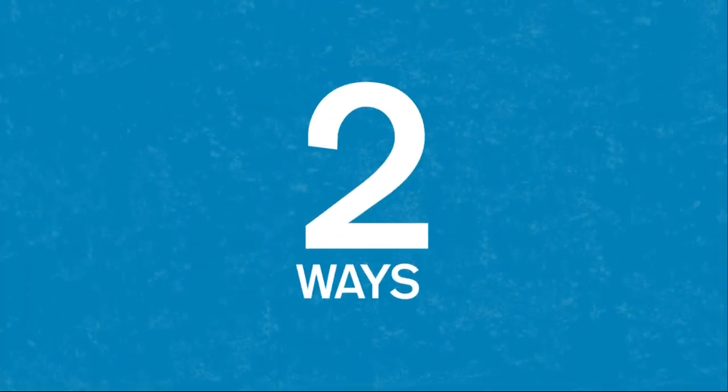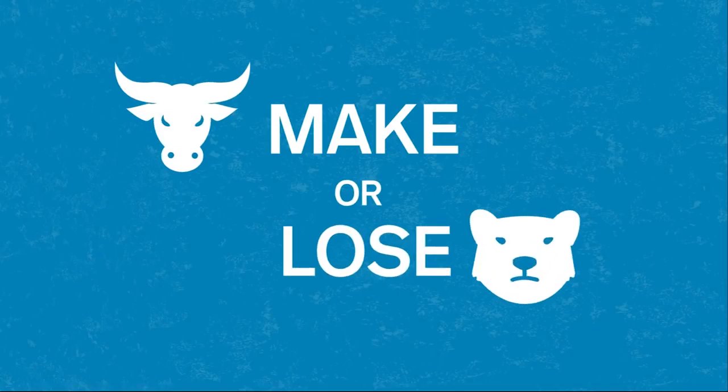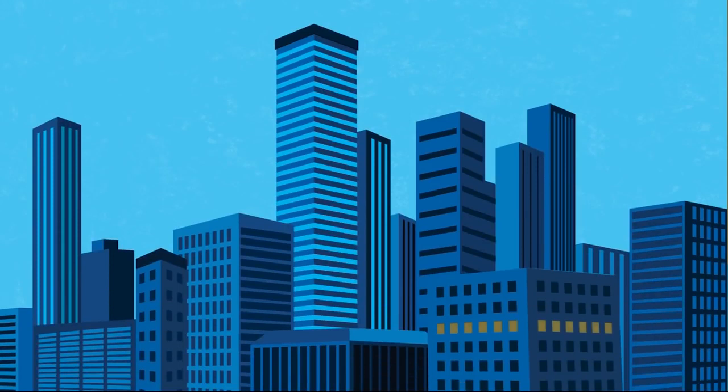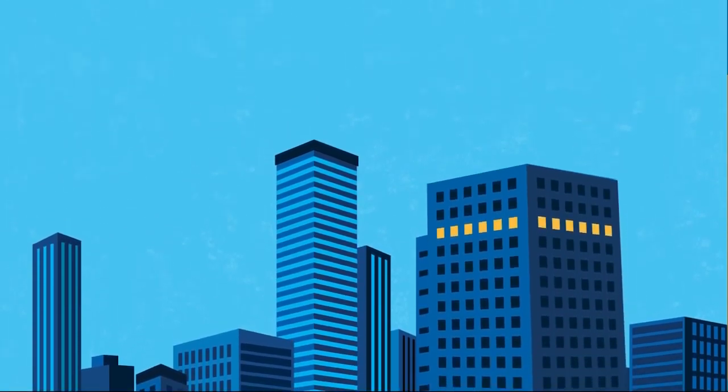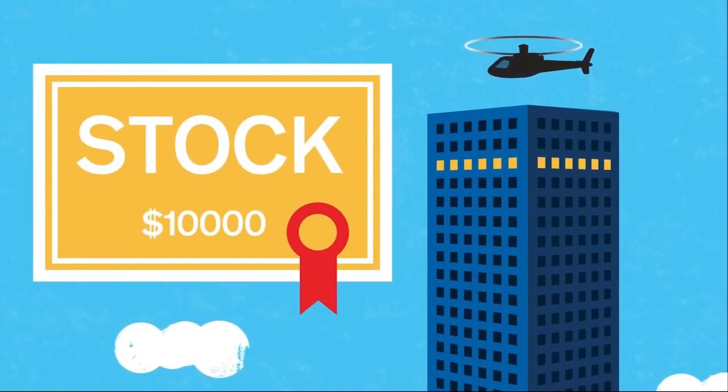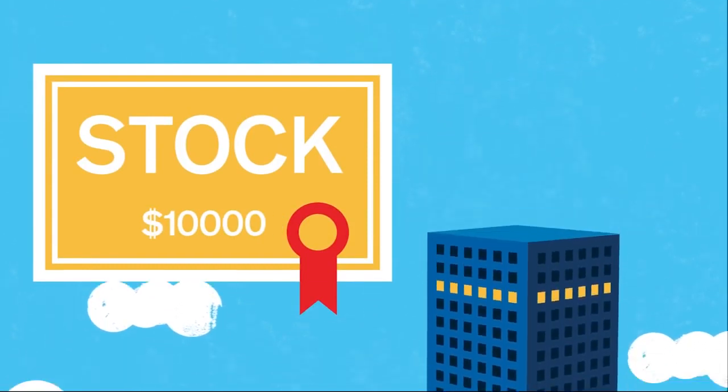There are two ways to make or lose money in the stock market. You see, when you own a stock, you actually own a piece of a company. And as the value of that company increases, the stock price goes up. But if the value of the company goes down, the stock price goes down too.